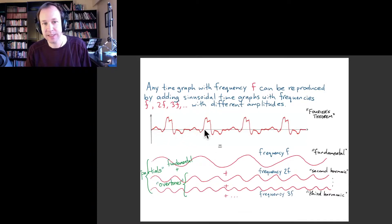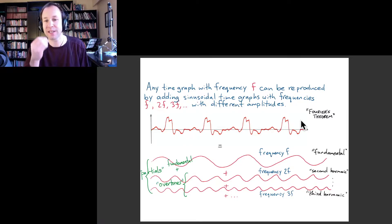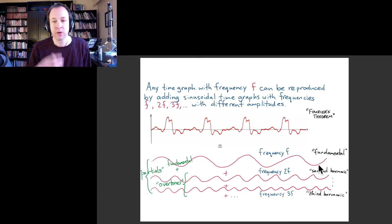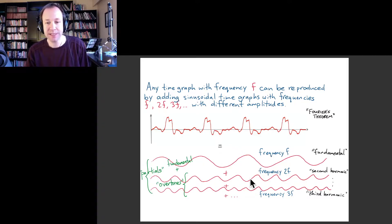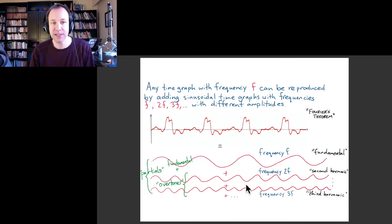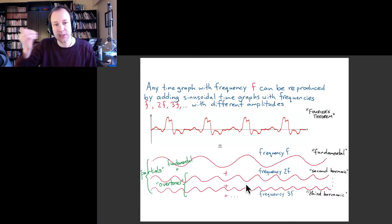Take this particular time graph that corresponds to a note on a saxophone. We could actually decompose that into a sinusoidal wave with the same frequency as the original note, plus a wave with double the frequency, triple the frequency, and so forth. The combination of those pure tones sounds to us just like the original note.